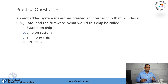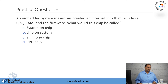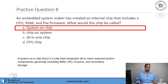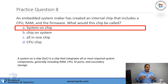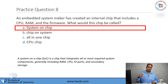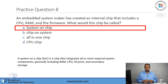Question number eight: an embedded system maker has created an internal chip that includes a CPU, RAM, and firmware. What would this chip be called? A, system on a chip. B, chip on a system. C, all-in-one chip. D, CPU chip. The answer is a system on a chip. You find these in a lot of small devices — basically one chip contains all the main components needed to run that particular system.